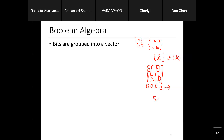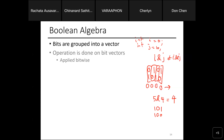Another example: 5 & 4. Five is 101 in binary, four is 100. Pairwise AND gives 100, which is 4. So 5 & 4 = 4. Bitwise operations treat your number as a vector of bits and apply the operation to each bit pair.